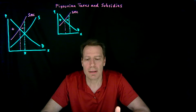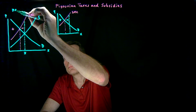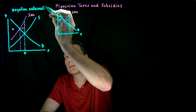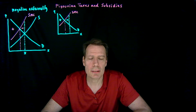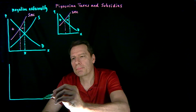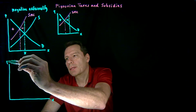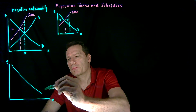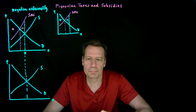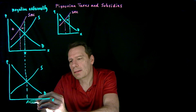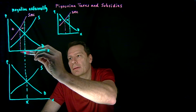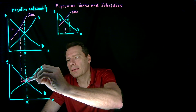So the bottom line is that with a negative externality, the market produces too much. The market quantity is distorted away from the optimal quantity. If we redraw this with just the demand and supply curves, the market will produce where demand intersects supply, but the fact that there's a negative externality implies that the optimal quantity is less than that.